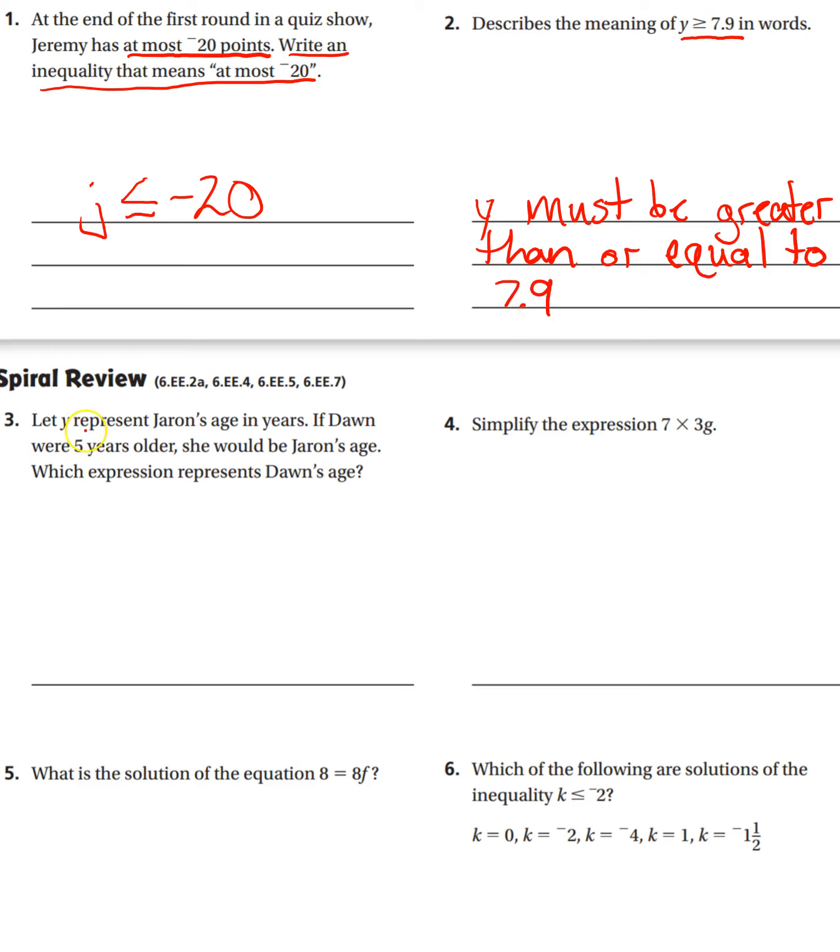Number three: let Y represent Jaren's age in years. If Dawn were five years older, she would be Jaren's age. Which expression represents Dawn's age?